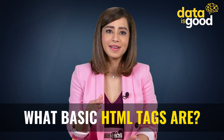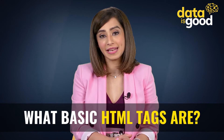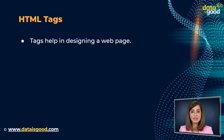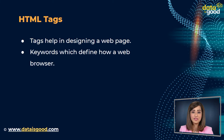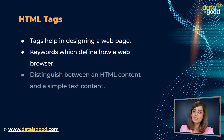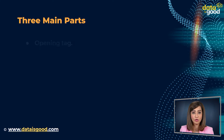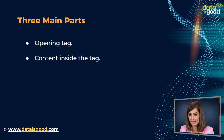First, let's understand what basic HTML tags are. There are a range of HTML tags that help in designing a web page. These HTML tags are like keywords which define how a web browser will format and display the content. With the help of these tags, a web browser can distinguish between an HTML content and a simple text content.